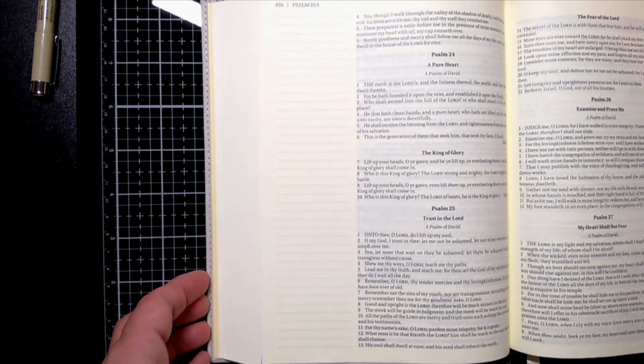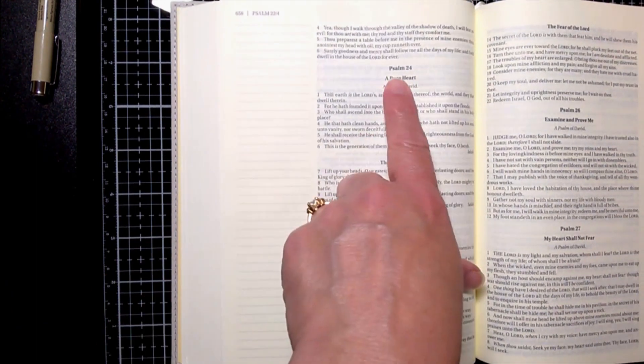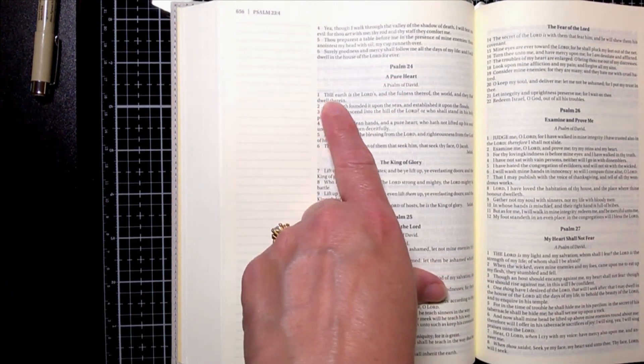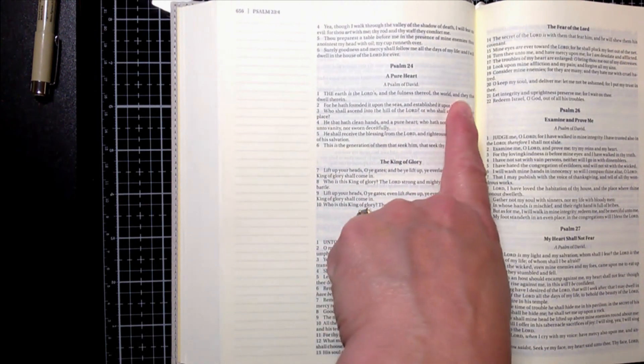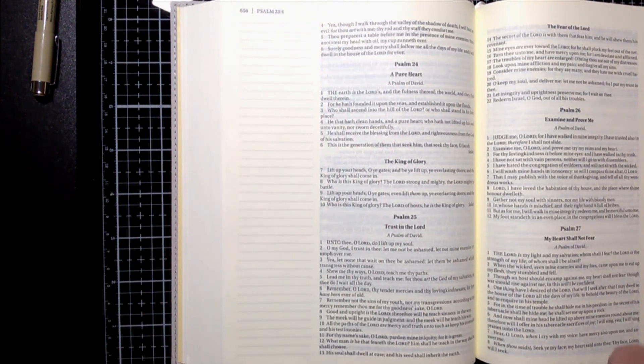Good morning, today we're going to be doing some Bible journaling. I have Psalms 24 verse 1: the earth is the Lord's and the fullness thereof, the world and they that dwell therein.